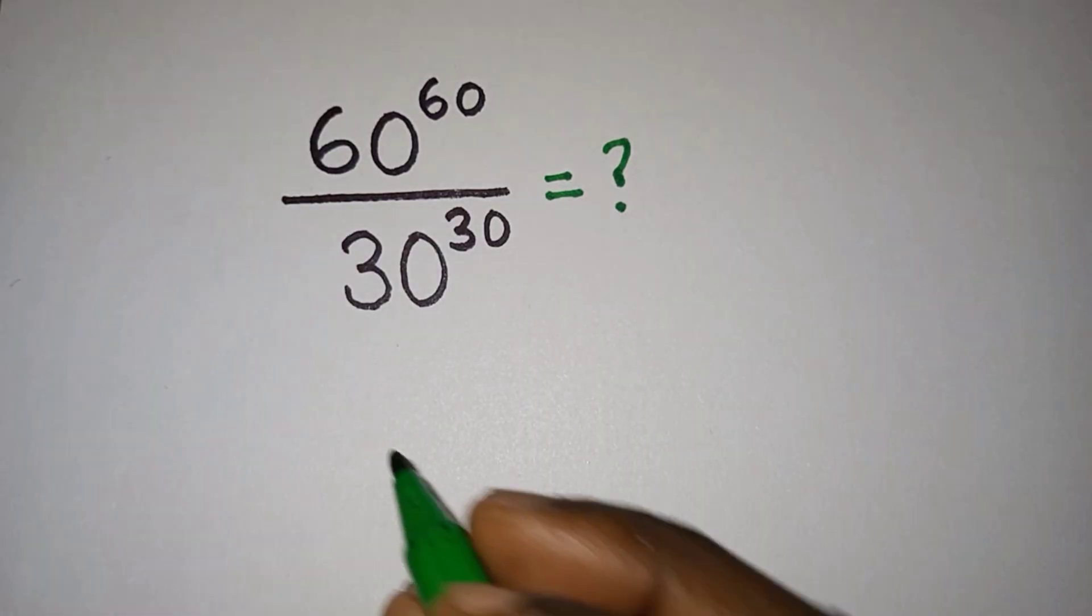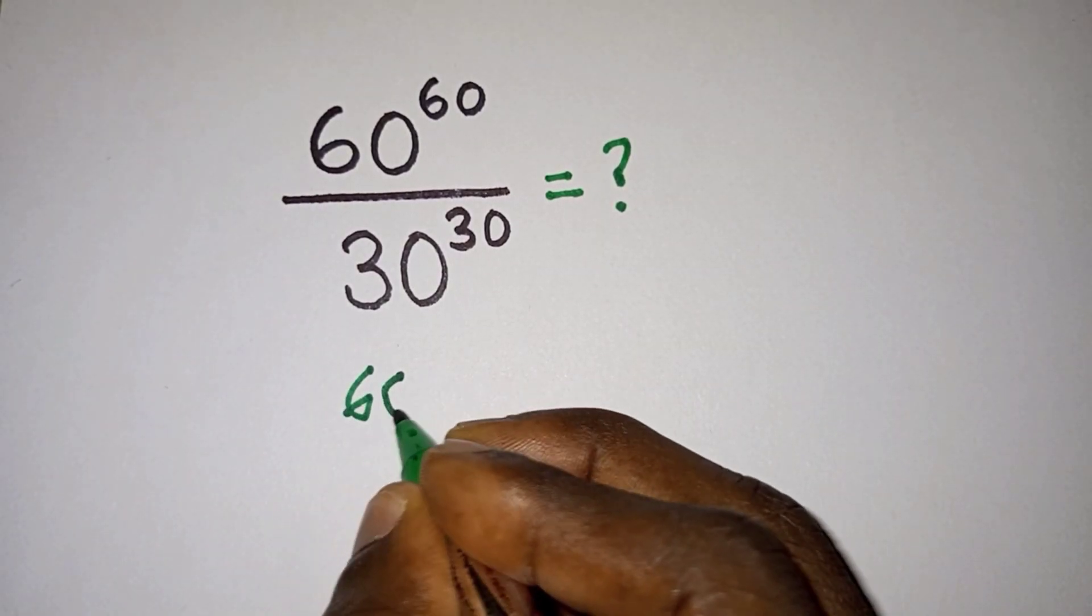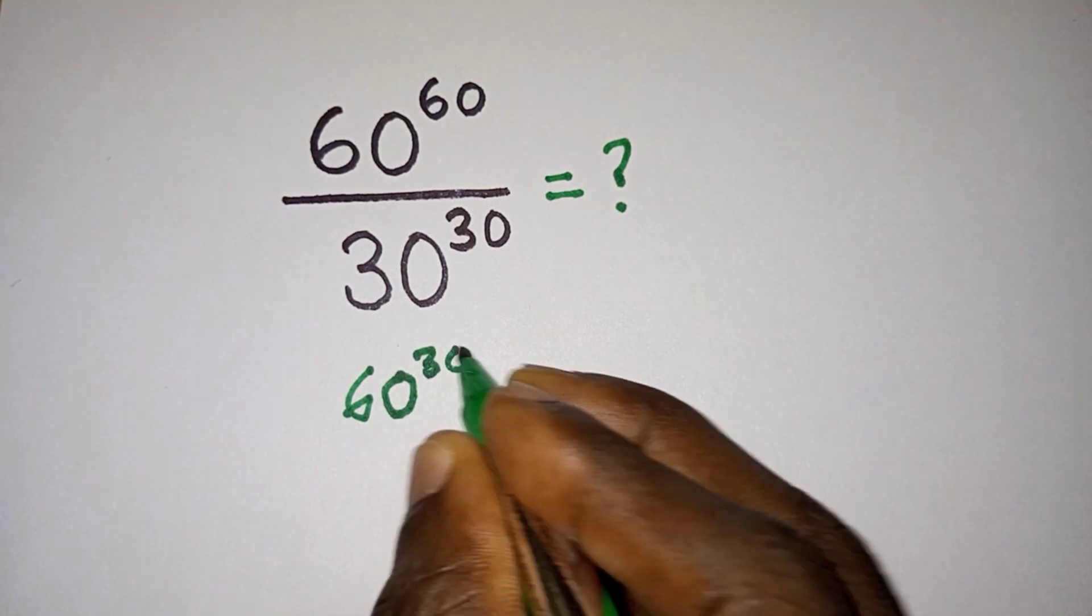Now let's get started. First, let's pay attention to the numerator side. We're gonna have 60 to the power 60 as 60 to the power 30 plus 30, then all divided by 30 to the power 30.